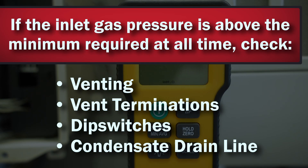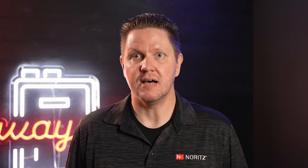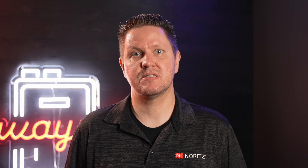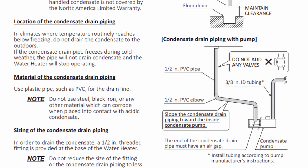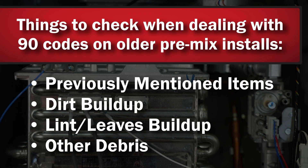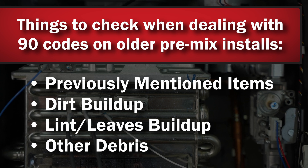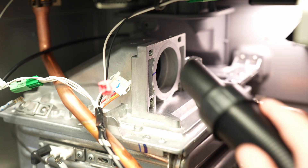If the inlet gas pressures are above the minimum required at all times, you're likely looking at an issue with the venting, termination, dip switches, or condensate drain line. Make sure the guidelines in the installation manual regarding venting limitations are followed. Assuming they are, also make sure you've correctly set the dip switches according to how it's vented. Check that the intake and exhaust terminations are done with approved terminations. Also make sure the condensate drain line under the unit is the correct size, routed properly according to the guidelines in the manual, and that the end of the drain line is not submerged in water. For existing older installations of pre-mix units, you're still going to check all of the previously mentioned items, but you're mostly looking for a buildup of dirt, lint, leaves, or other debris that have obstructed the venting. Clean any debris from terminations and make sure the condensate drain line is still free of any obstructions. If cleaning those items does not resolve the 90 code, a deeper cleaning of the fan and burner may need to be done by a professional.